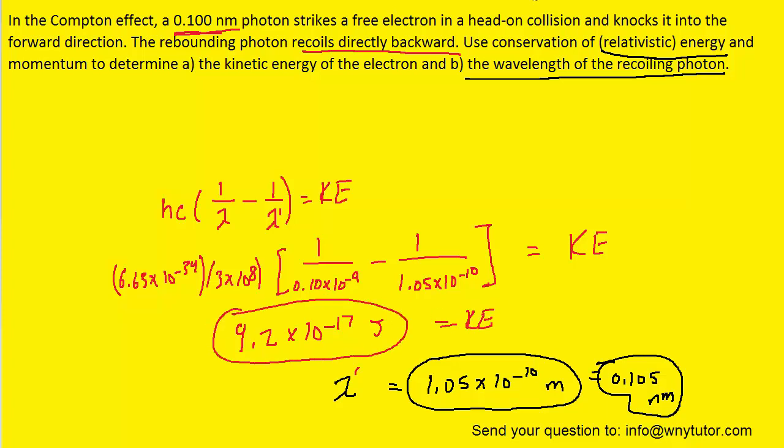And then if you wanted, you can convert that into the common unit of electron volts. And to do that, we can say that one electron volt is equivalent to 1.6 times 10 to the negative 19 joules. The joules will cancel. And when you type that into your calculator, you would get roughly 575 electron volts. So that would be an equivalent answer for the kinetic energy of the electron.